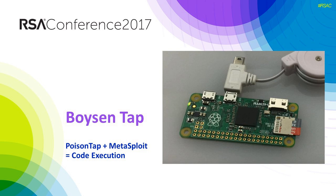The second attack that we are going to highlight is what we are calling PoisonTap — basically a PoisonTap Raspberry Pi that can plug into a USB port on a Windows system and exploit the system, even on a locked computer, to take full control over the endpoint itself. Once you plug this little Raspberry Pi into the USB port, it will effectively route all traffic right through the Pi, which will deliver malicious payloads to the user without the user ever knowing it.